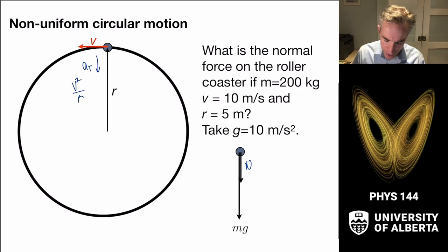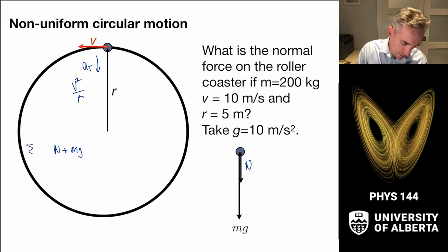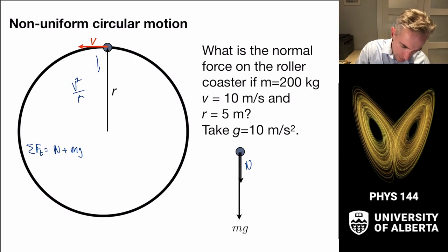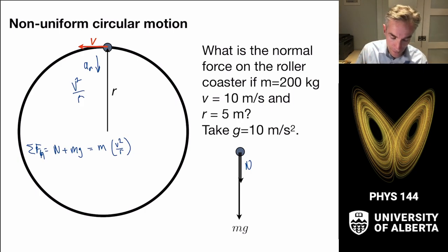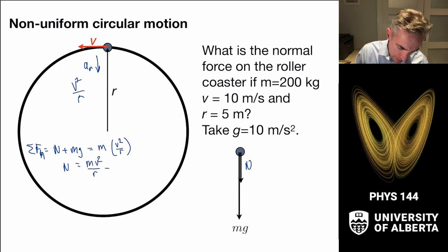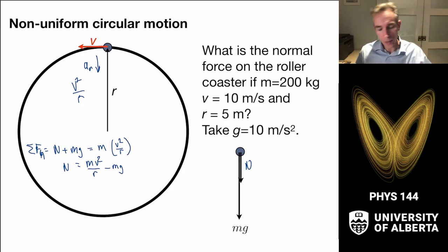The forces in the normal direction — N plus mg — must equal mass times the centripetal acceleration, m times v squared over r. We know it must have that acceleration if it's on a circular track. So the normal force is just m times v squared over r minus mg. Both forces provide the centripetal acceleration; we know one of them is the weight, and we solve for the other.